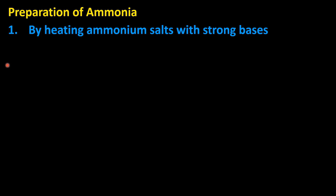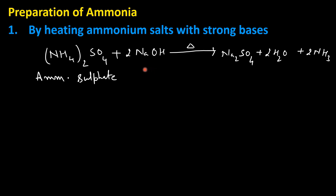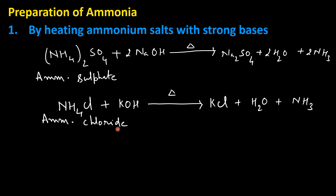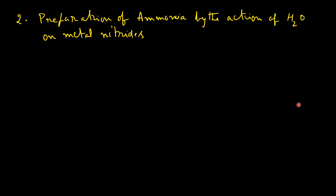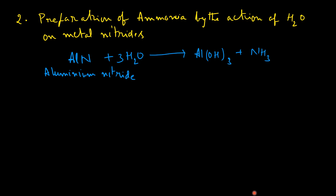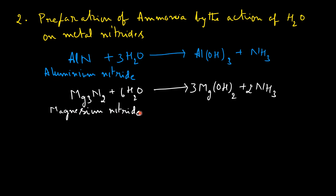Preparation of ammonia: Ammonia can be prepared by heating ammonium salts with strong bases. Ammonium sulphate heated with sodium hydroxide at high temperature gives ammonia, sodium sulphate, and water. Ammonia can also be prepared by heating a mixture of ammonium chloride and caustic potash at high temperature to get ammonia gas. Additionally, aluminium nitride treated with water gives aluminum hydroxide and ammonia.